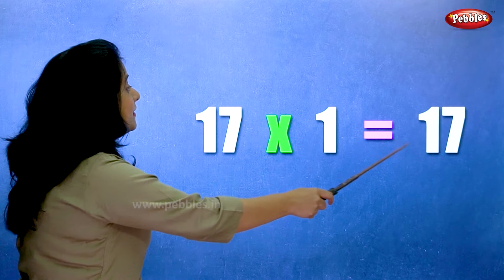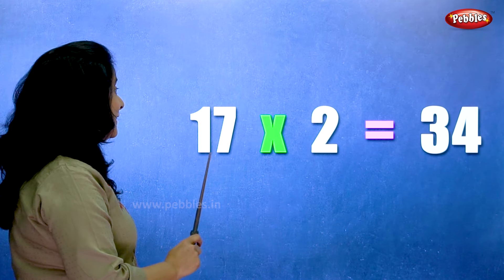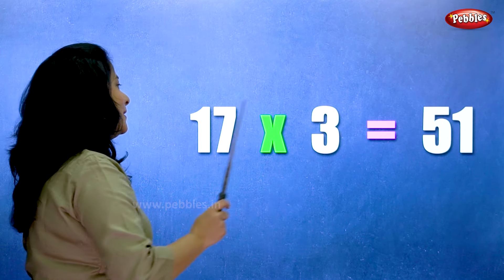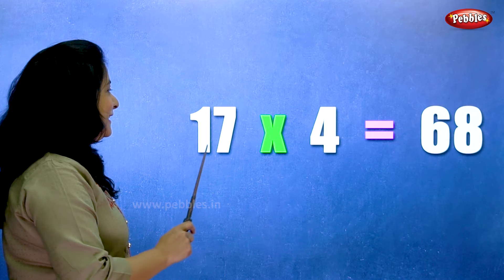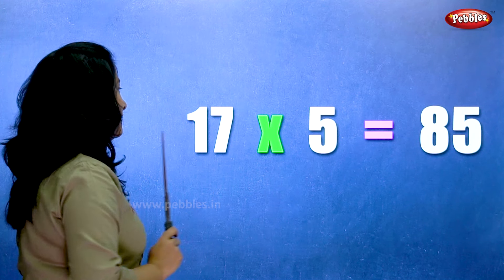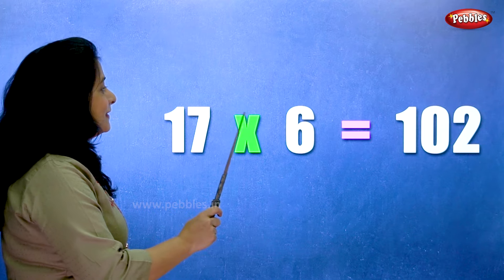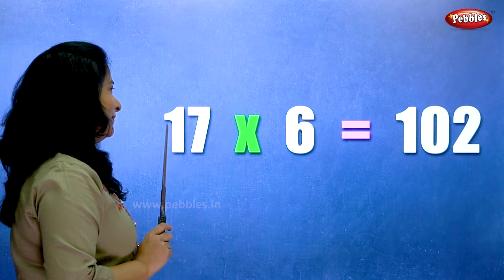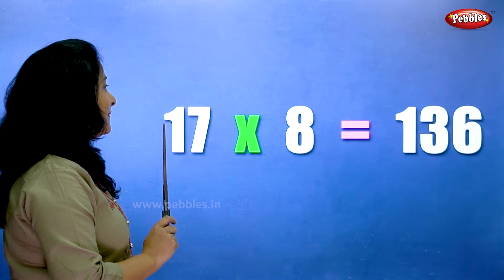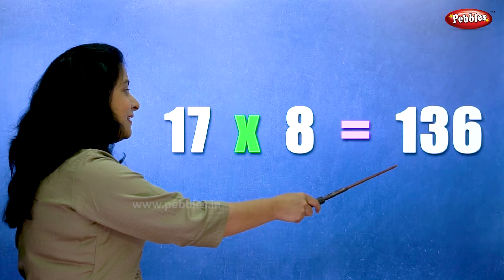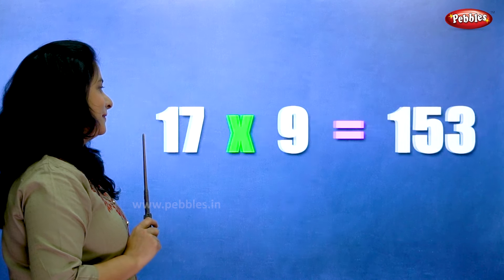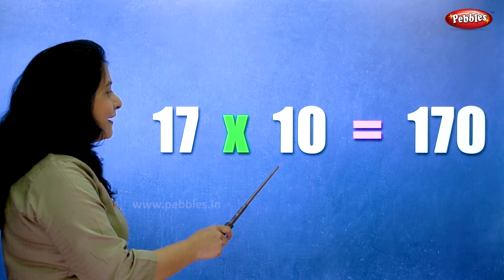Seventeen ones are seventeen. Seventeen twos are thirty-four. Seventeen threes are fifty-one. Seventeen fours are sixty-eight. Seventeen fives are eighty-five. Seventeen sixes are hundred and two. Seventeen sevens are hundred and nineteen. Seventeen eights are one thirty-six. Seventeen nines are one fifty-three. Seventeen tens are one seventy.